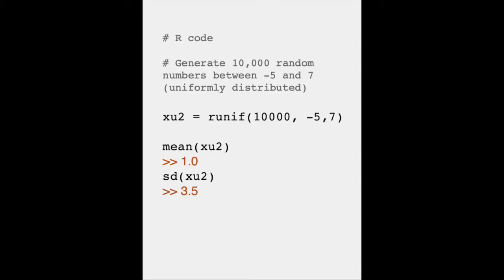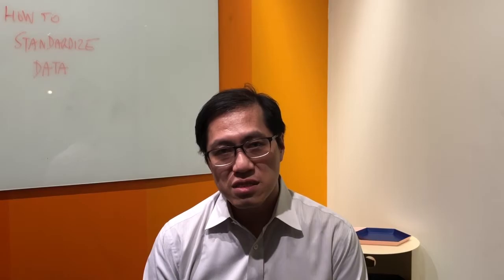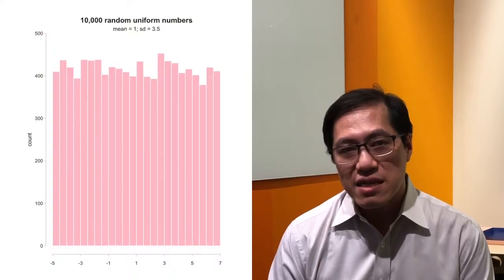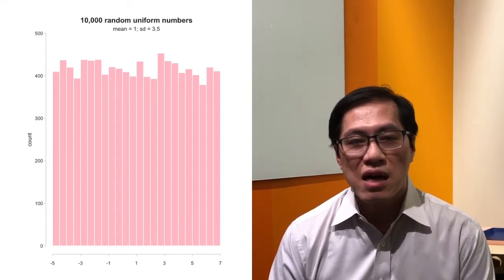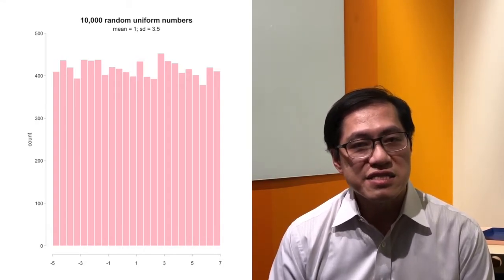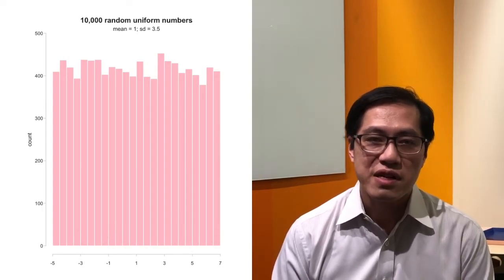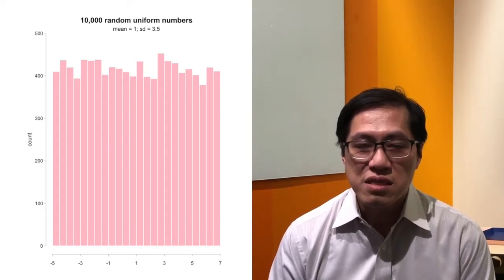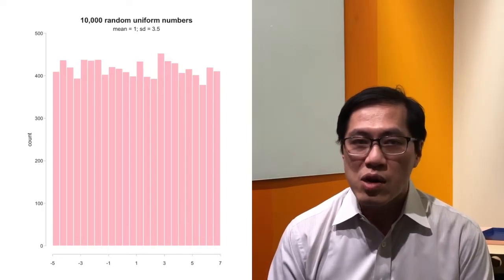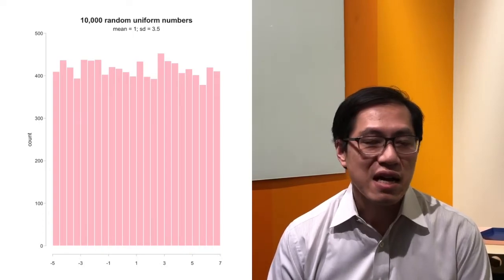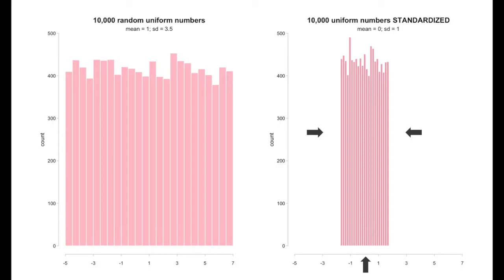I wrote some R code that generates random numbers between the values negative 5 and 7. The average value of this set of 10,000 random numbers is 1, and the standard deviation, which measures the dispersion of the values around this average, is 3.5. Here is a visual picture of the data — you can see that all the columns are roughly equal in height. The height of the column is how many values exist in a particular range. The smallest number is negative 5 and the largest is 7, by design. When we build a uniform distribution, we require that every value has equal chance of occurring. After we standardize the data, you'll notice that the shape of this standard score distribution is still roughly uniform.